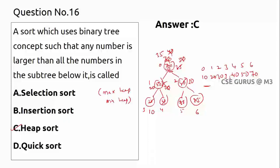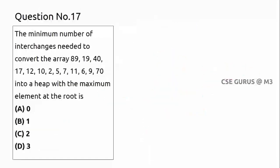Question number 17: the minimum number of interchanges needed to convert an array into a heap with the maximum element at the root. Since the maximum element must be at the root, we must construct a max heap. We'll construct the tree starting with 89 at the root.